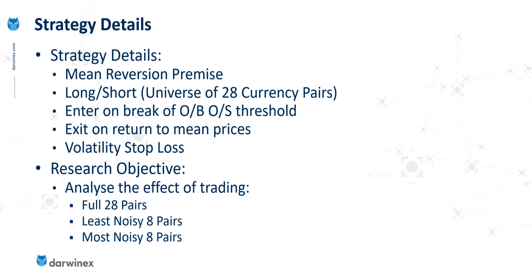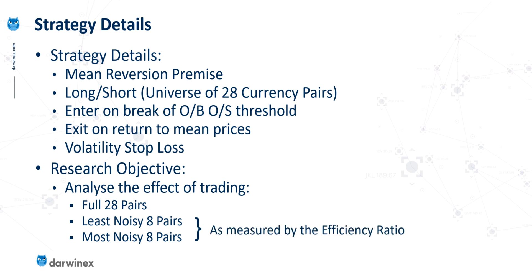I'm going to show you three different sets of results: one where the strategy trades all 28 pairs, another set of results when only trading the least noisy eight pairs, and finally one that only trades with the most noisy eight currency pairs. The measure I'll be using to identify those assets is the efficiency ratio.